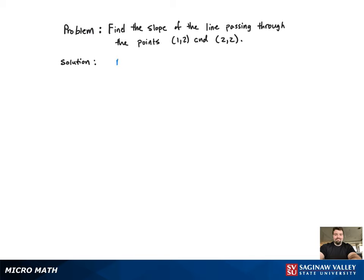To find the slope, we first need the equation, which is provided: m equals y2 minus y1 divided by x2 minus x1. Now we just need to plug the two points into the equation. Arbitrarily, we'll let (1, 2) be the first point and (2, 2) be the second point.